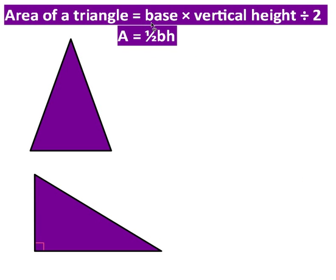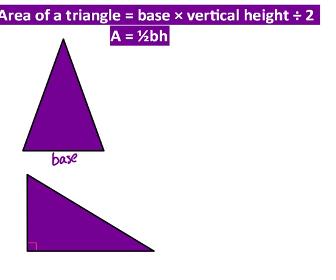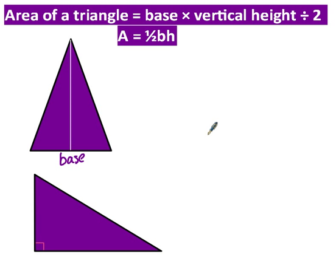Area of a triangle. This equals base times vertical height divided by 2, or algebraically, A equals half BH. So I've got two triangles here. And let's say that this is the base. Then the vertical height is always the height that is perpendicular to the base. Perpendicular means at 90 degrees or at right angles. So here is the distance that is at right angles to the base. So it's that length there that I would need to multiply by the base and divide by 2.